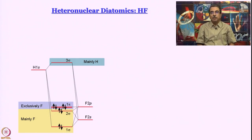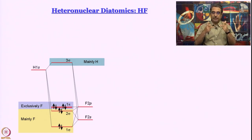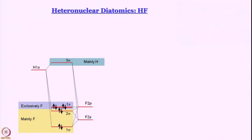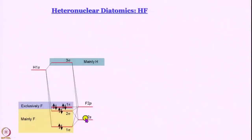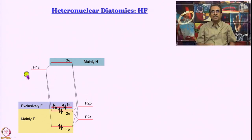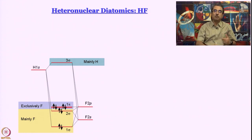If you think of F 2s and F 2p and compare with H 1s, we are considering the internuclear axis to be the z axis. So when we want to discuss sigma interaction, it is the 2pz orbital of fluorine that is going to participate. The 2px and 2py orbitals will remain on fluorine because on the hydrogen atom there is no other orbital of sufficiently low energy with comparable symmetry.